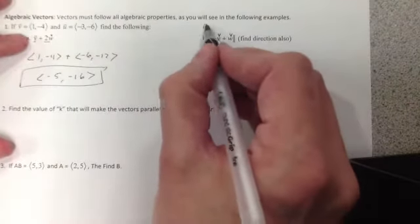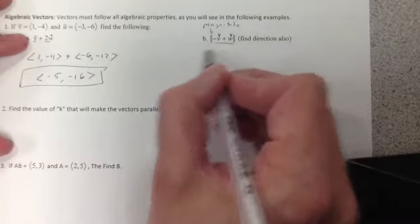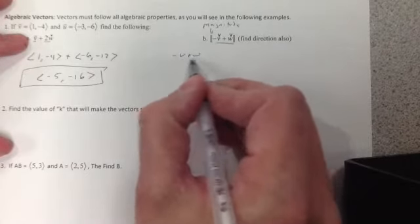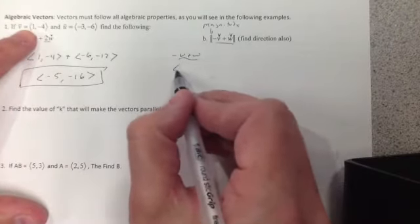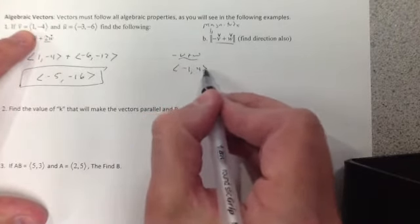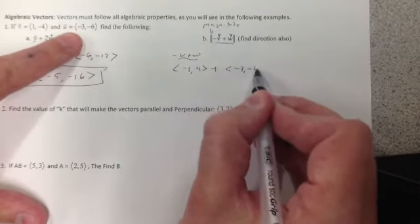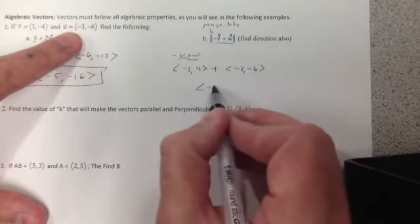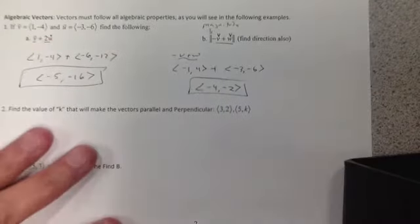Even B, it says I'm looking for magnitude, but we have to use the order of operations. I have to take negative V plus W. So to do that, negative V, change your signs, negative 1, 4, plus W, negative 3, negative 6. Add them together, negative 4, negative 2.